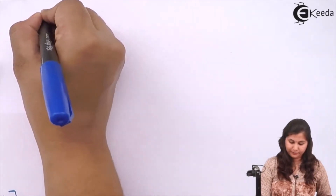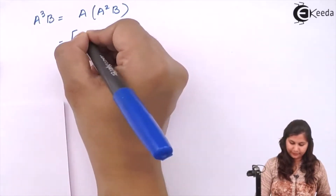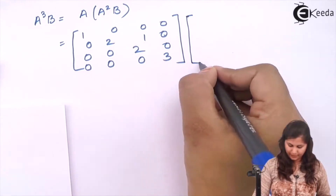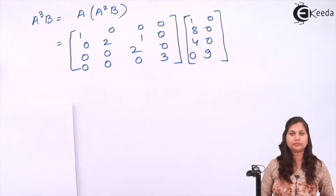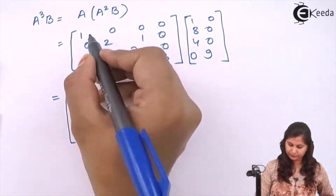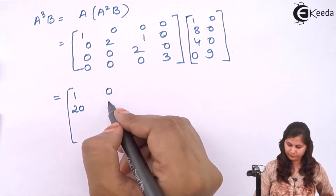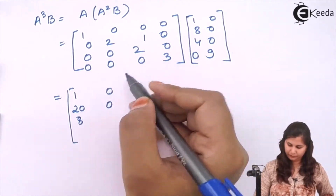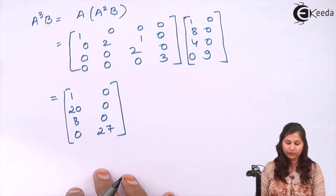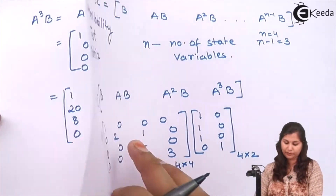Now we have to calculate A³B. We do this by multiplying A with A²B already calculated. After performing this multiplication we get A³B, completing all the terms needed for the controllability matrix QC: B, AB, A²B, and A³B have all been calculated. Now we put their values together.